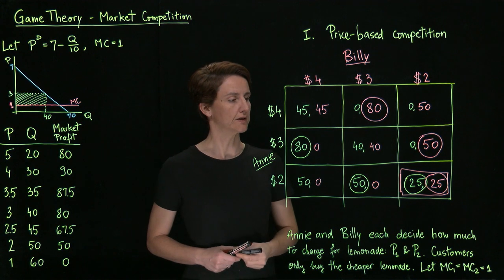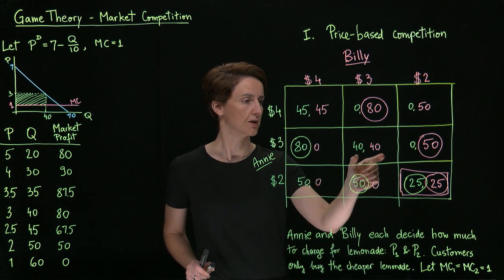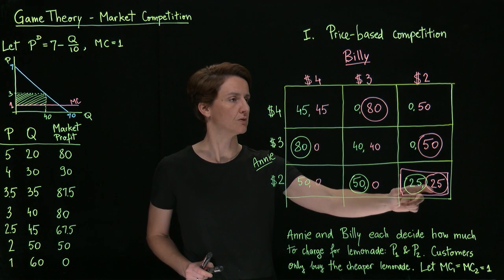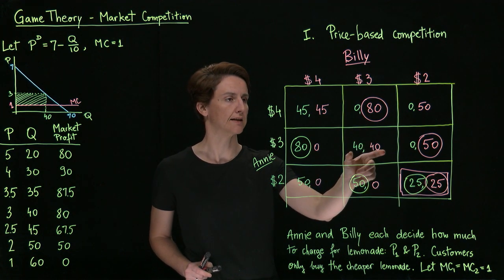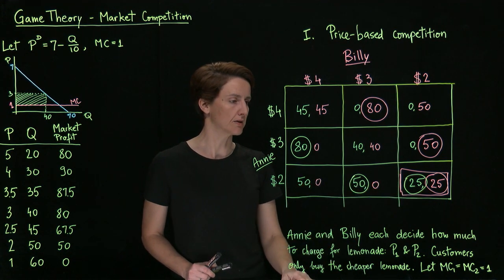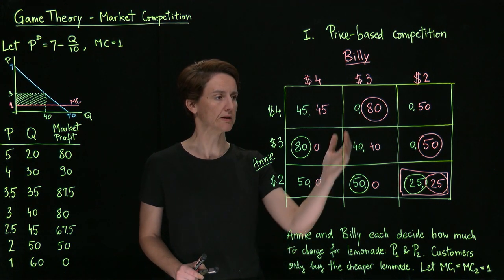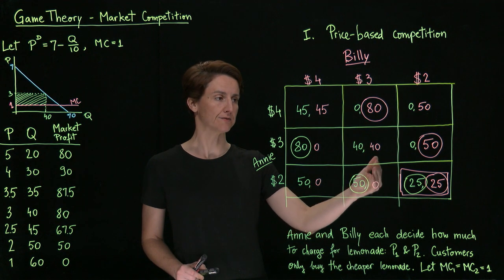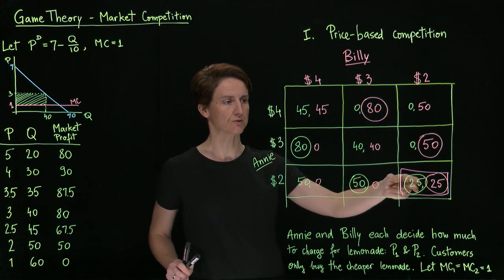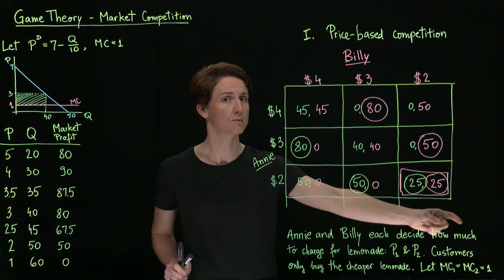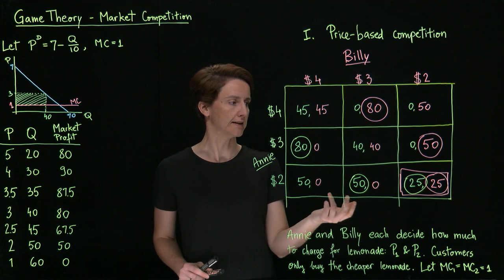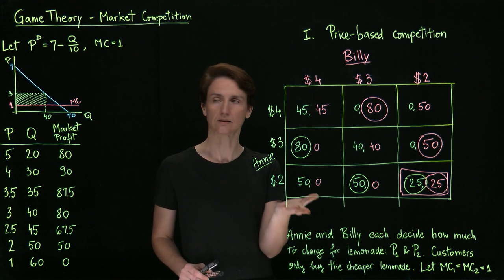In other words, the only equilibrium is the outcome in which their combined profit is actually minimized. You could imagine how if they were able to cooperate and set price at $3, or even better at $4, they could each have higher profits. This is just another example of a prisoner's dilemma game where the two players face individual incentives that lead them collectively to the worst outcome. If we added the option of pricing at $1.50, we would find that the equilibrium is where they both price at $1.50 — and so on. Essentially, there is no price where they will stop undercutting each other until they reach their marginal cost.